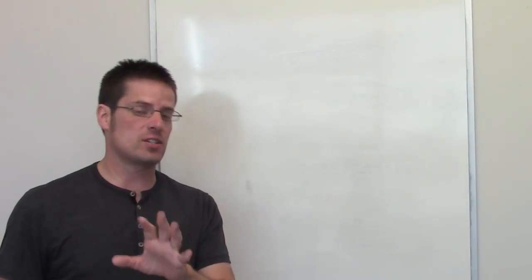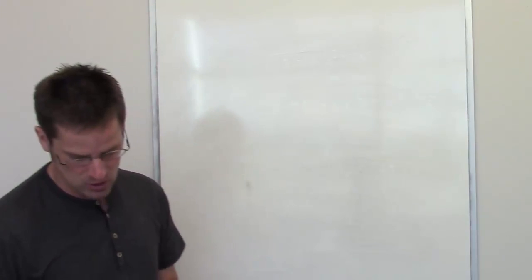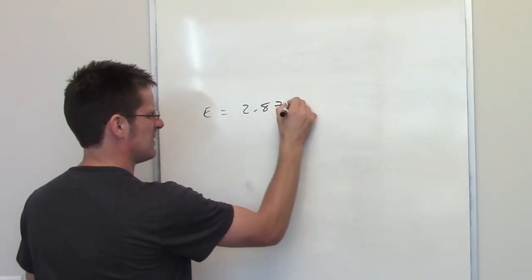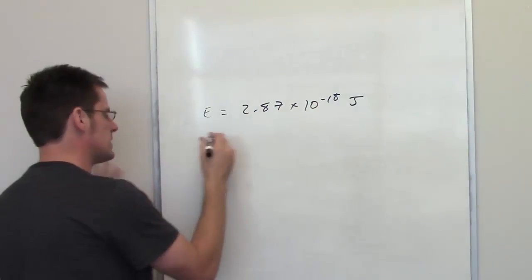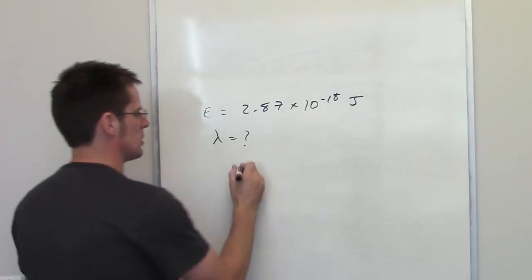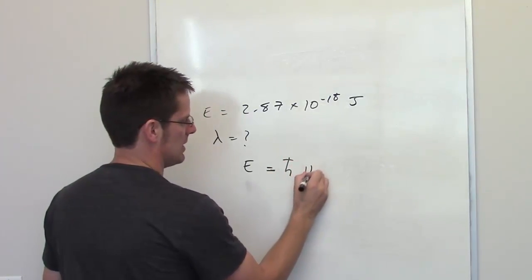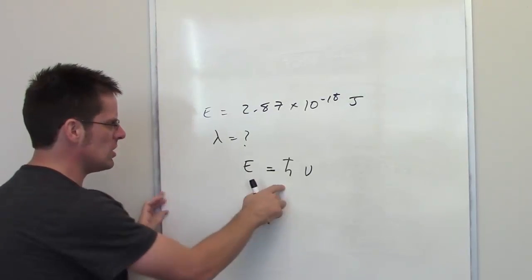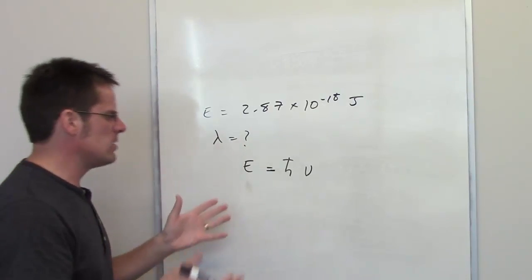In Part B, we're asked to determine what the wavelength is of a bunch of photons whose energy is equal to 2.87 times 10 to the negative 18th joules. We need to determine the wavelength. Planck's equation interrelates energy to Planck's constant multiplied by frequency, and you don't see wavelength in there, so you might initially think: how do I do this problem?